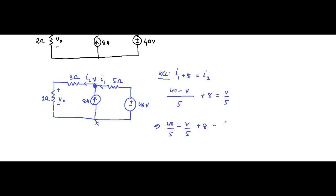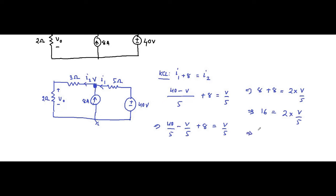Solving the equation: 40/5 − V/5 + 8 = V/5. That implies 8 + 8 = 2V/5, which gives 16 = 2V/5.